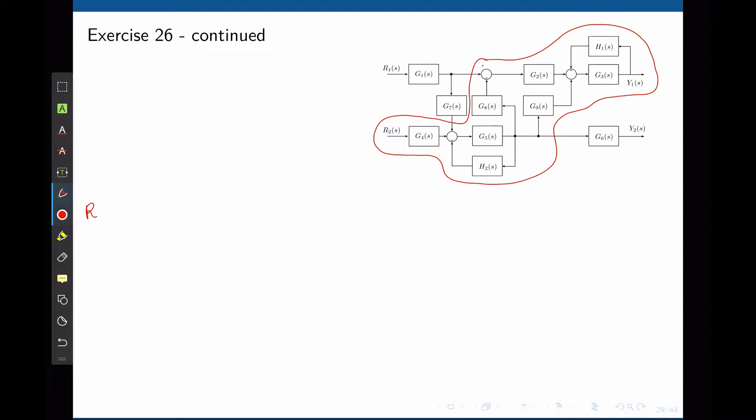So let's write our input R2 here. R2 is fed to G4, and now the output of G4 is connected to the sum between G5, that feedback loop I should say, between G5 and H2.